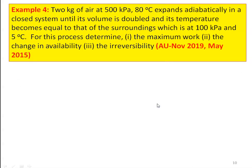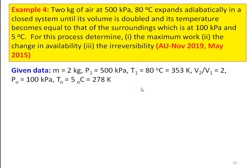Example number 4 from November 2019 and May 2015 question paper: 2 kg of air at 500 kPa, 80°C expands adiabatically in a closed system until its volume is doubled and temperature becomes equal to that of the surroundings at 100 kPa and 5°C. Determine maximum work, change in availability, and irreversibility. Given: M = 2 kg, P1 = 500 kPa, T1 = 80°C = 353 K, V2/V1 = 2, P0 = 100 kPa, T0 = 5°C = 278 K.